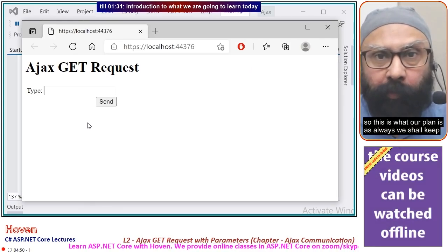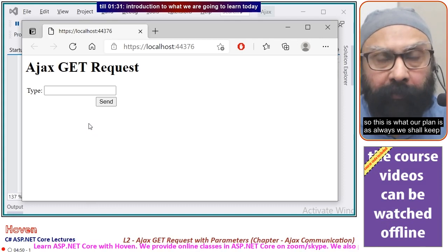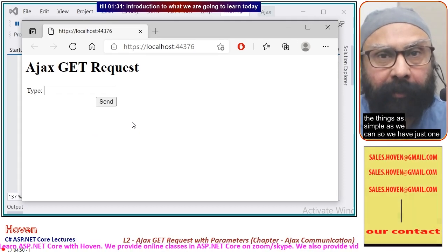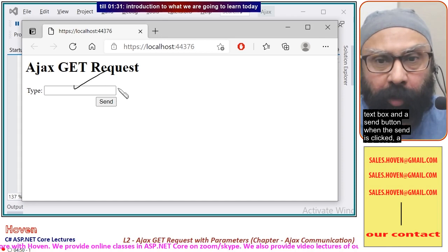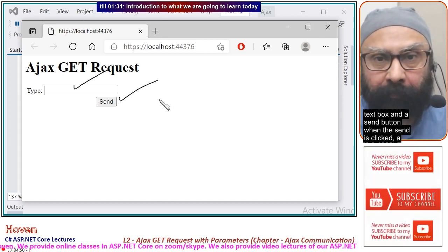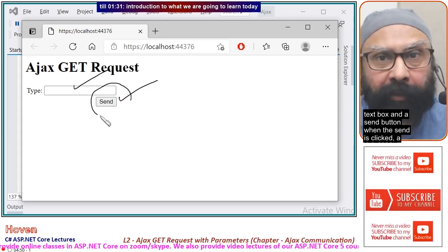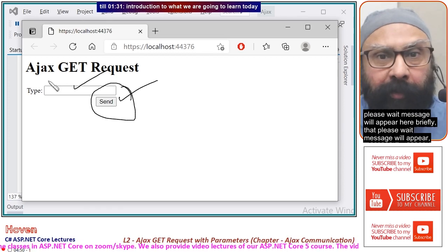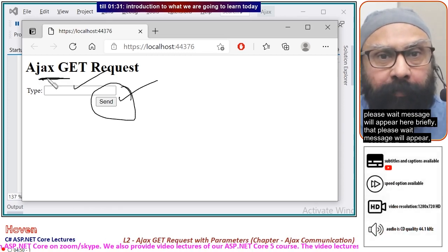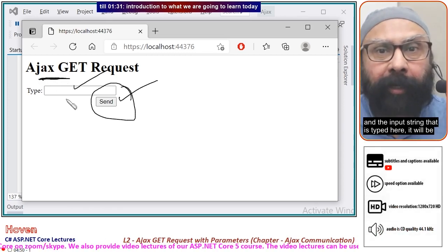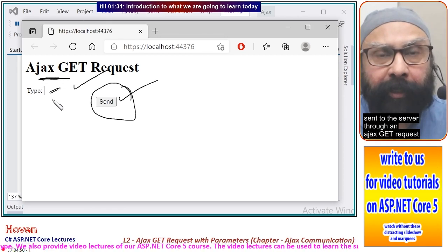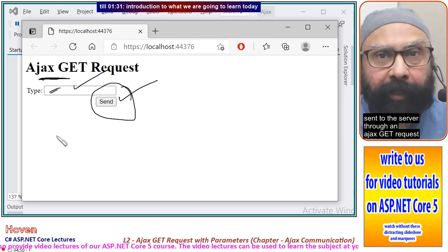So, this is what our plan is. As always, we shall keep things as simple as we can. We have just one text box and a send button. When send is clicked, a please wait message will appear briefly. The input string will be sent to the server through an AJAX GET request.